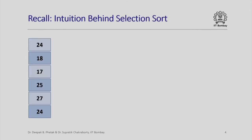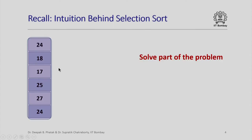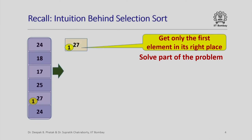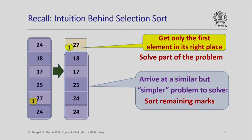Recall the intuition behind selection sort. We had an array of integers which was unsorted and we wanted to get them in sorted order — in particular, in decreasing order. We started with the unsorted array and solved a very small part of the problem: we found the maximum element and put it in its rightful place in the sorted array. Once we had done this, we were left with a similar but simpler problem — similar because we still had to sort the remaining elements, and simpler because we had one less element to worry about.